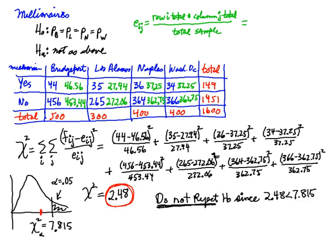We could also run this test with a p-value. The table at 3 degrees of freedom shows my 2.48 is between 0.584 and 6.251, so the p-value is somewhere between 10% and 90%. Using Excel to get the p-value more accurately, I get 0.4783, which is greater than the 0.05 level of significance we were willing to take — so again, do not reject. In other words, if we reject the null hypothesis, we are running a very high risk of being wrong and making a type 1 error. So we do not want to reject based on the p-value.